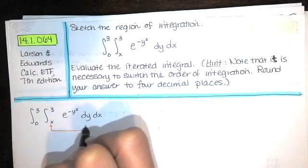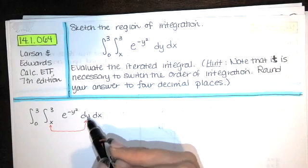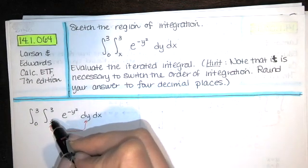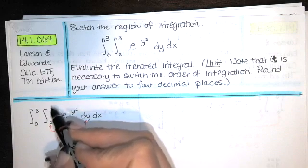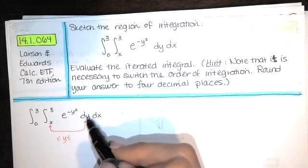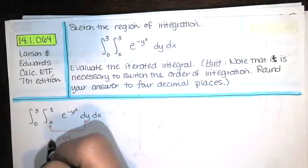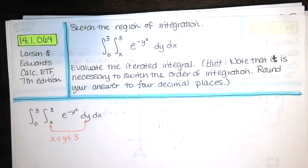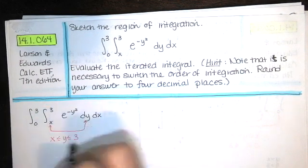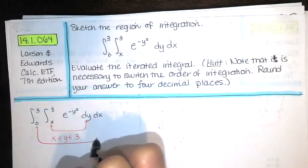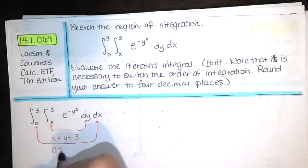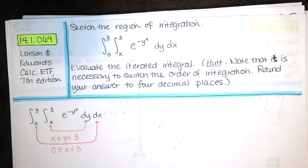The innermost bounds go with the innermost variable, and our innermost variable is y. We're thinking of the lower bound being associated with lower values of that variable and the upper bound with higher values. So when we say that y goes from x to 3, we're usually saying x ≤ y ≤ 3. The outermost bounds go with the outermost variable, so x starts at 0 and ends at 3.